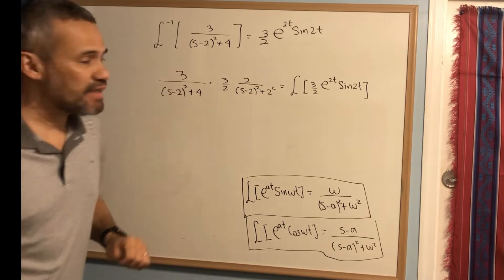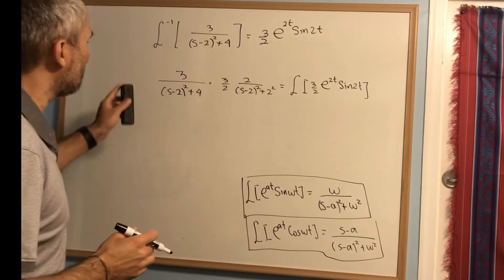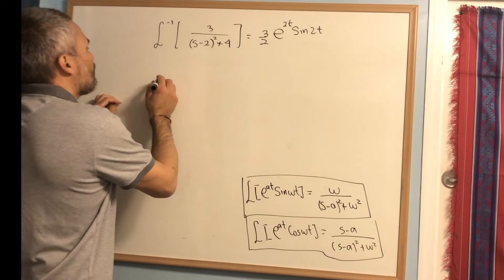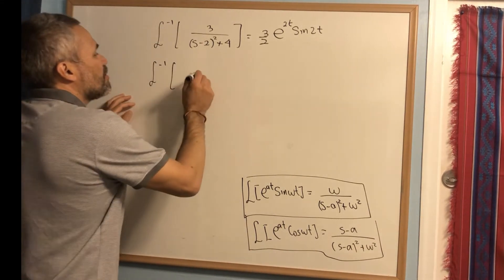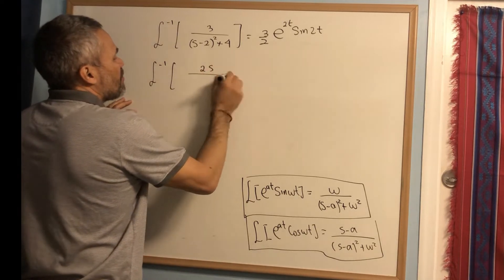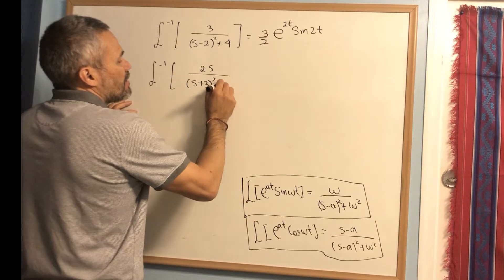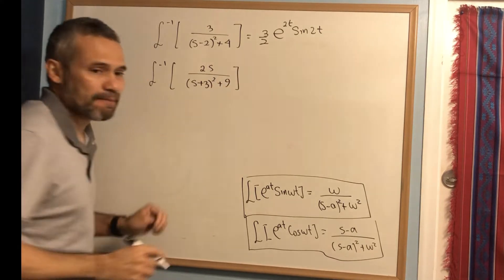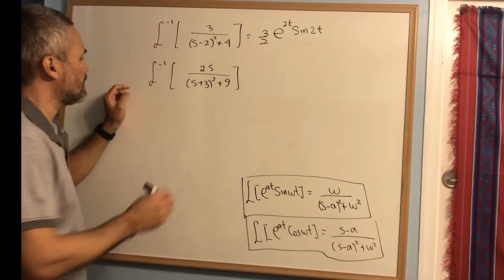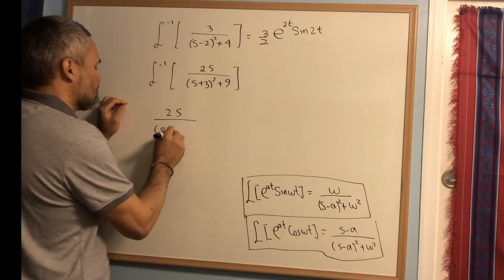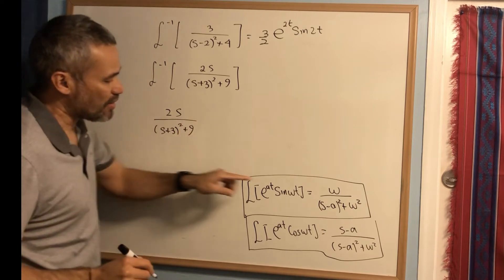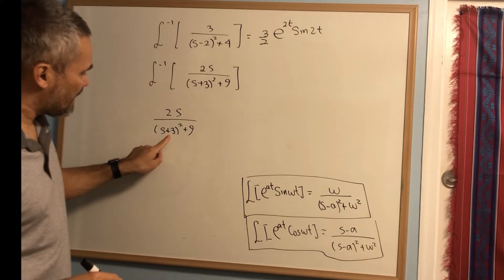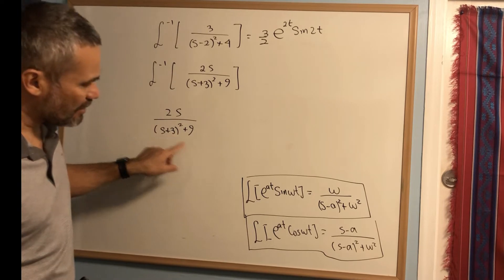Let's try a more challenging example: compute the inverse Laplace transform of 2s over (s+3)(s²+9). We want to write this as a combination of our two formulas. We identify a = -3, so we want s minus a = s+3 to appear in the numerator, but currently we only have s.